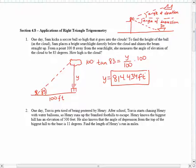Henry knows the biggest hill has an elevation of 500 feet. He also knows that the angle of depression from the top of the biggest hill to the base is 11 degrees. Find the length of Henry's run in miles.